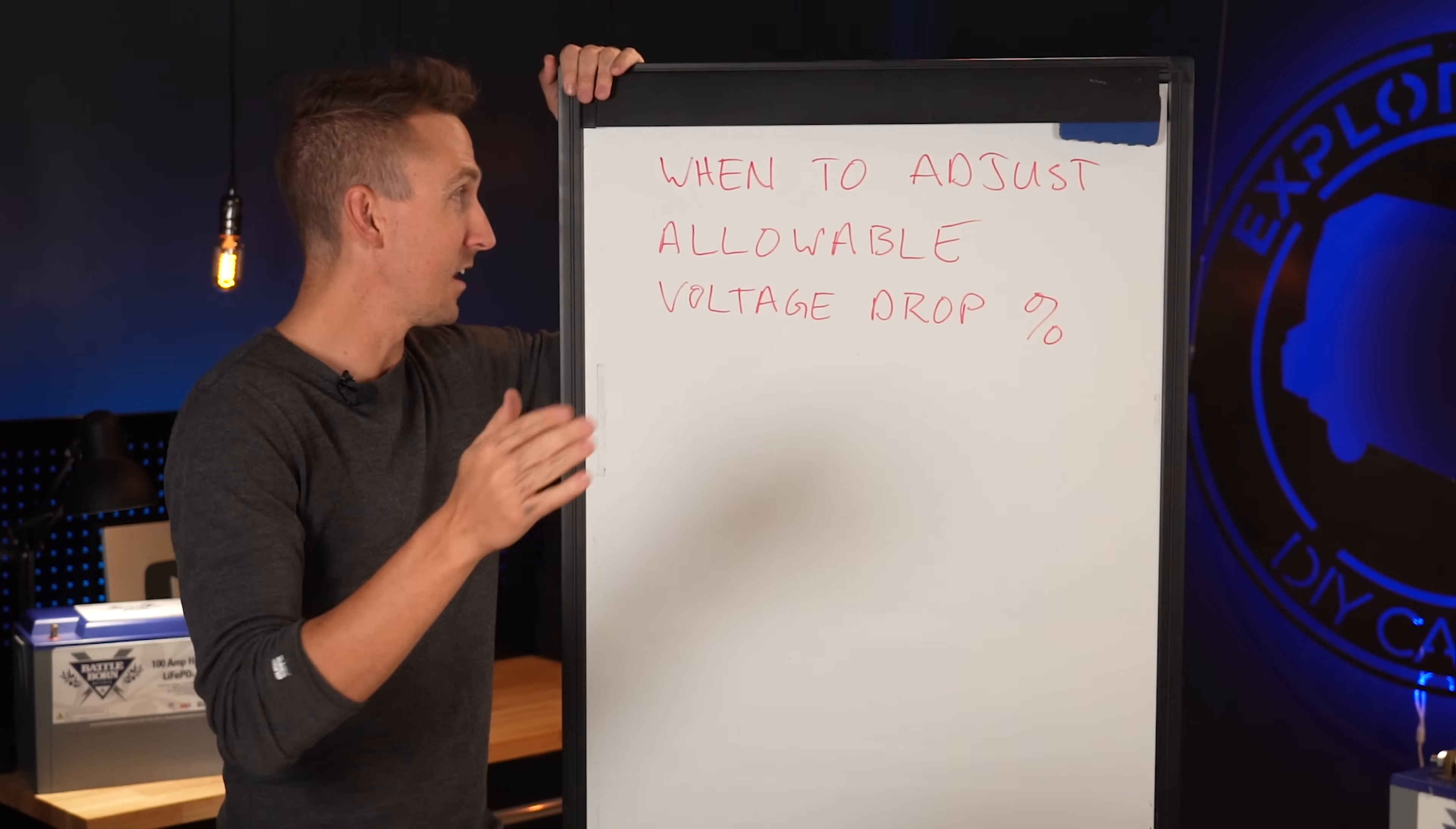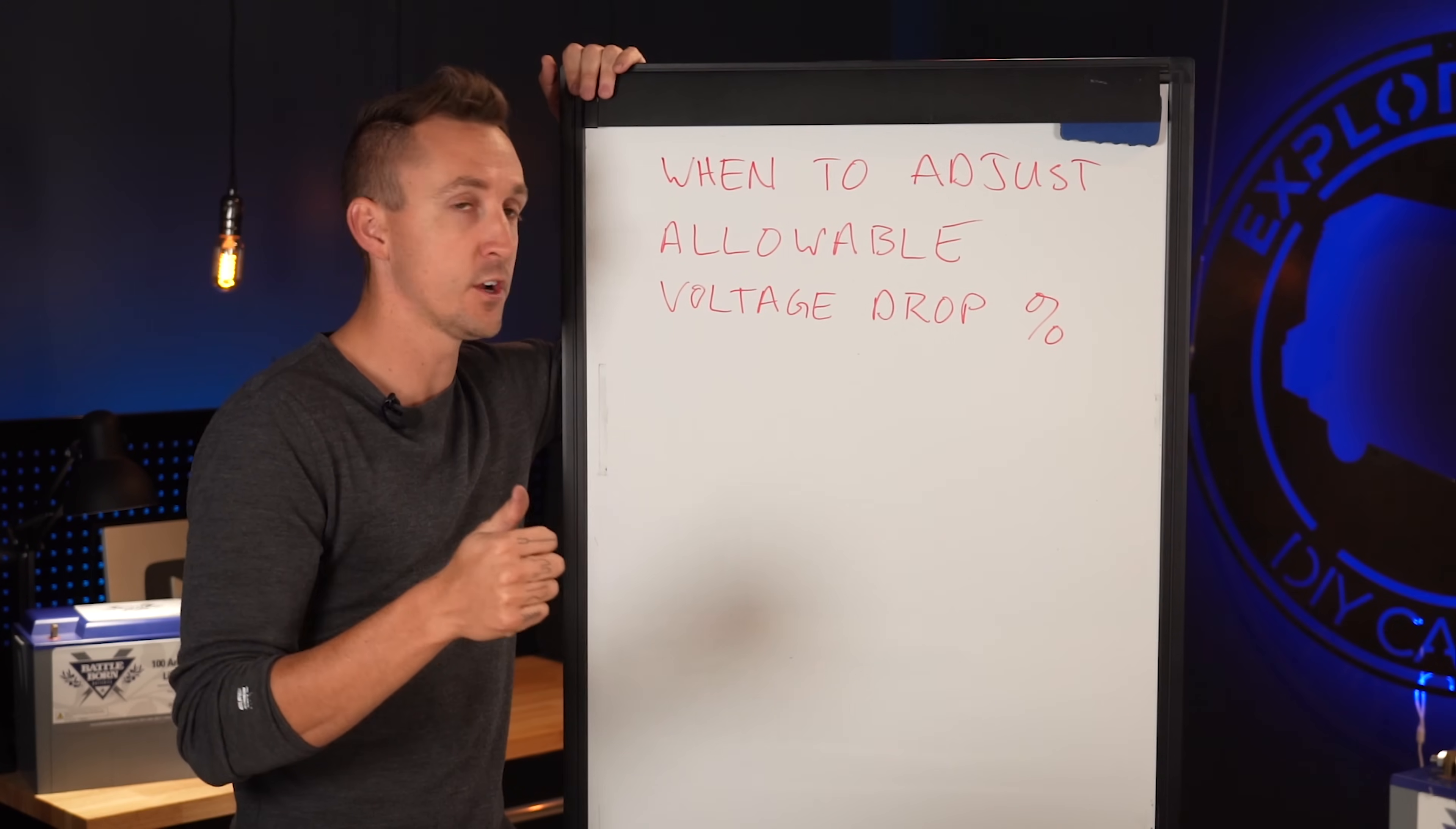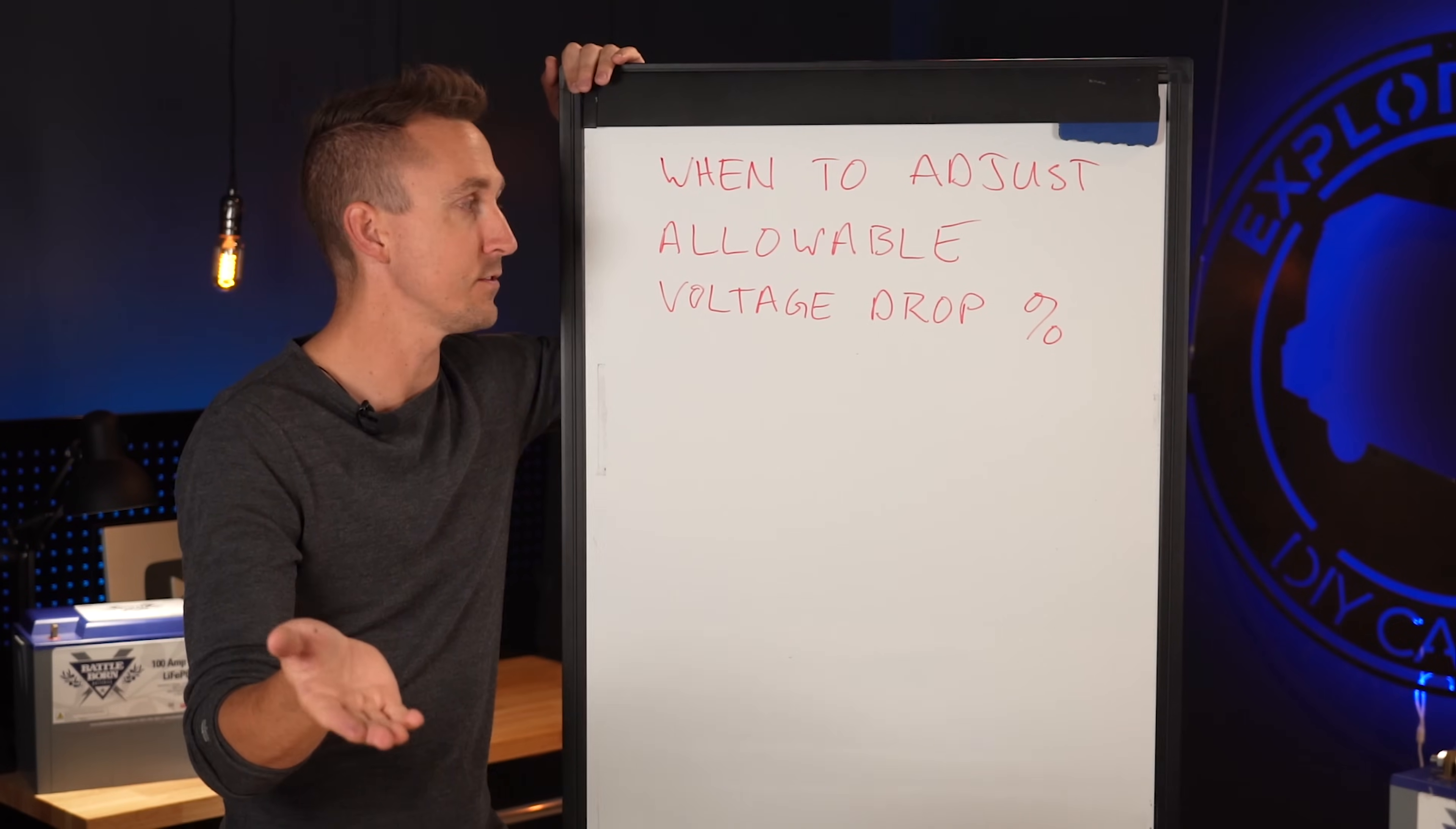When is it allowable to adjust voltage drop percentages? Well, on a boat, ABYC, they say that you should have 3% voltage, no more than 3% voltage drop for any critical loads. So like bilge pumps, navigation lights, things that if you were to lose power to those items, it would be dangerous to life and safety.